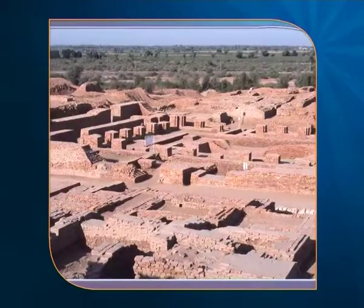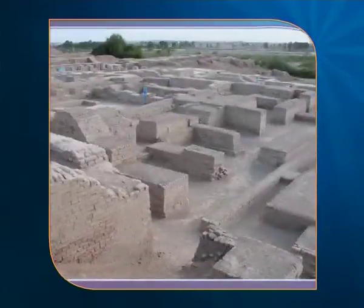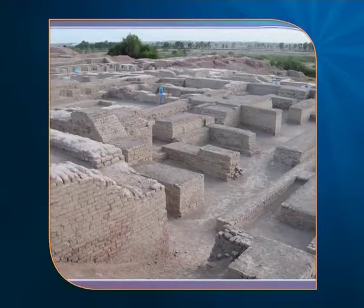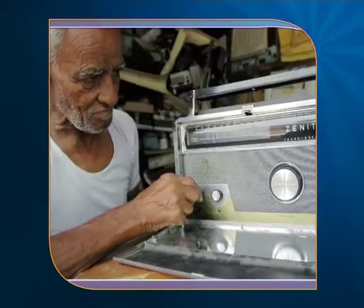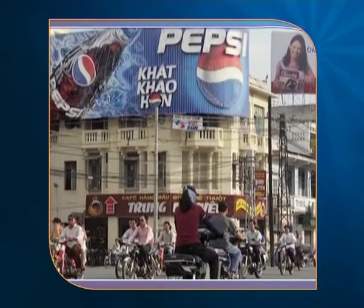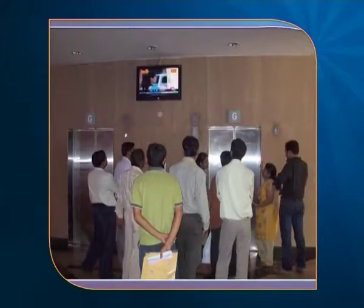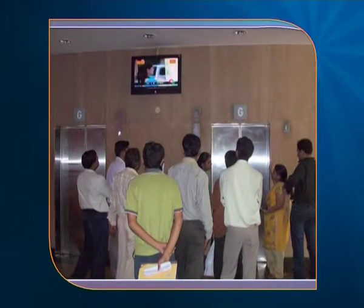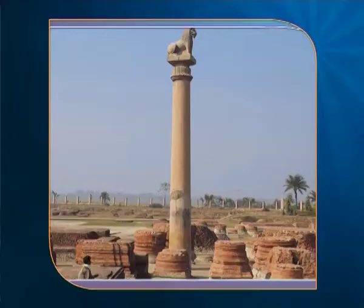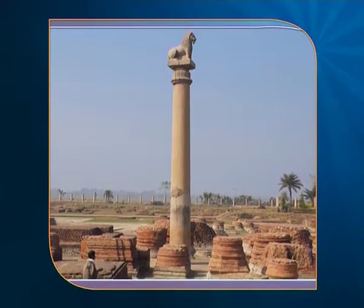How did advertising originate? Can you imagine two people with drums walking down the streets of Mohenjo-daro, the city of the Indus Valley civilization, shouting their own and others' messages? People would stop and listen just as you do when you stop to read an advertisement on the road or watch an advertisement on television. In the Indian subcontinent, during Emperor Ashoka's reign, stones or pillars were used for making public announcements. There have always been advertisements of some sort or the other.